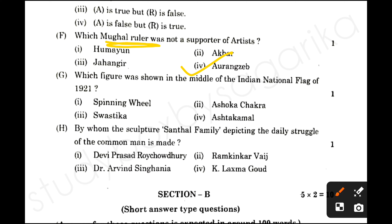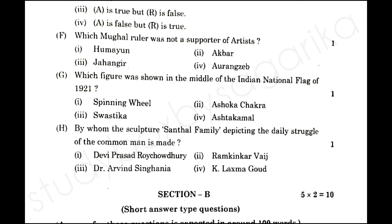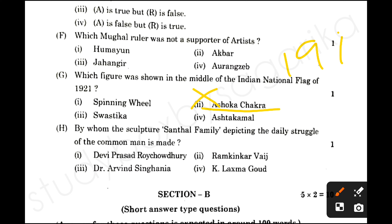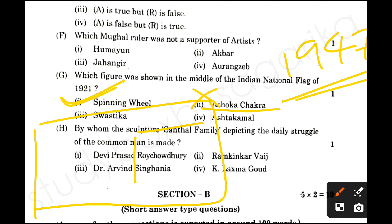Next: which figure was shown in the middle of the Indian National Flag in 1921? They gave Ashoka to confuse you, but that is from 1947. The answer here is the spinning wheel. I have given notes — I also wrote that the flag under it had a spinning wheel.